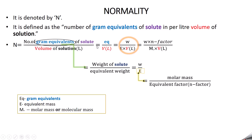Mathematically, normality is equal to EQ divided by volume of the solution in liters, where EQ represents gram equivalents, capital E represents equivalent mass, and M₀ represents molar mass or molecular weight. Normality equals EQ divided by volume in liters.